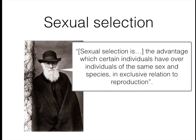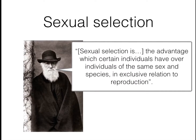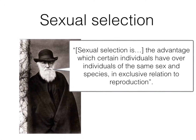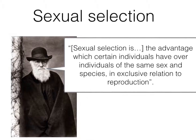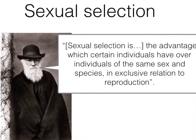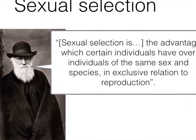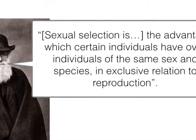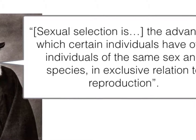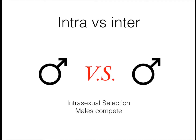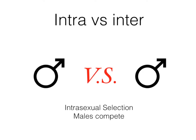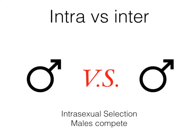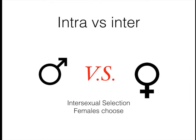Sexual selection, according to Darwin, is seen as different from natural selection, since the traits developed here don't exactly help a species to survive, but they do help them to reproduce by appealing to a preferred preference for a certain trait within the species. Darwin said that sexual selection is the advantage which certain individuals have over individuals of the same sex and species in exclusive relation to reproduction. There are two types: intrasexual selection, when males fight or contest each other to gain access to females, and intersexual selection, when females choose their male mate.